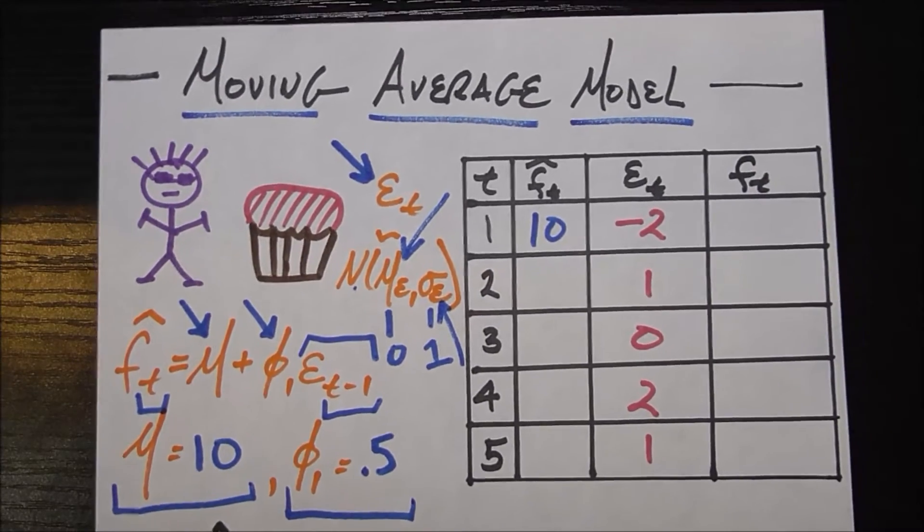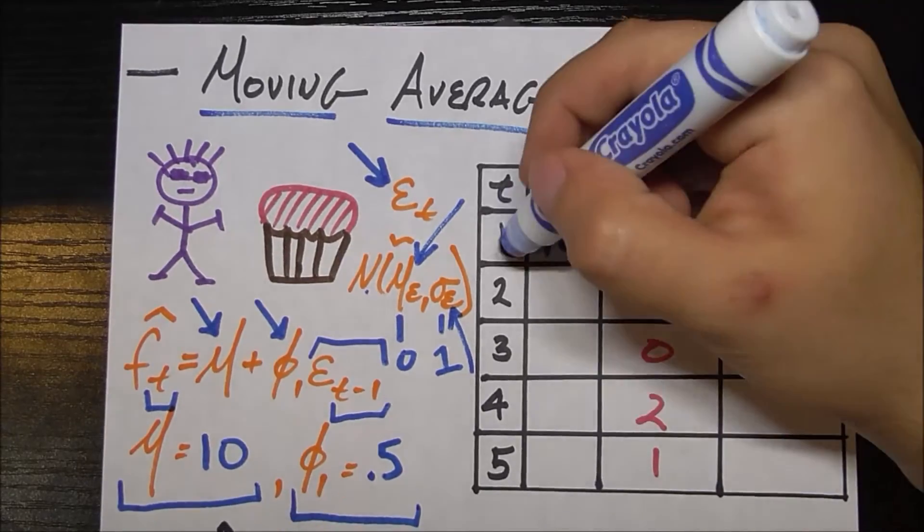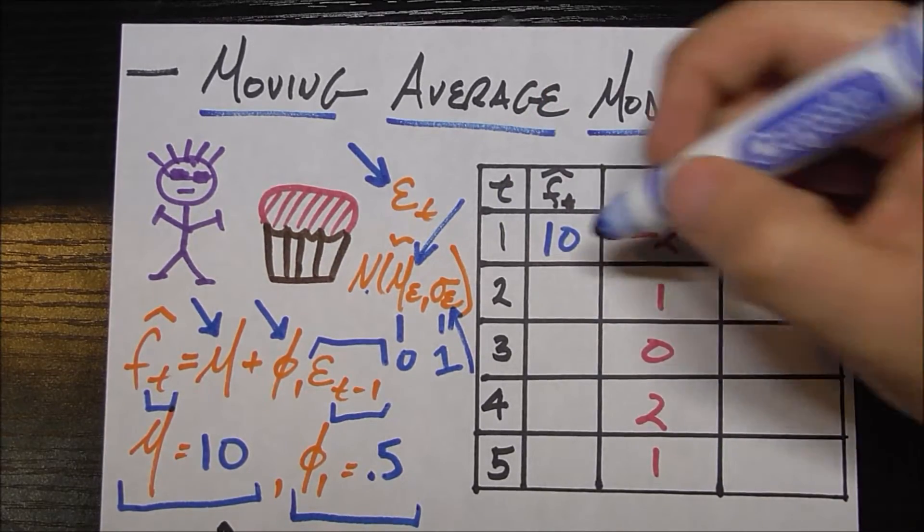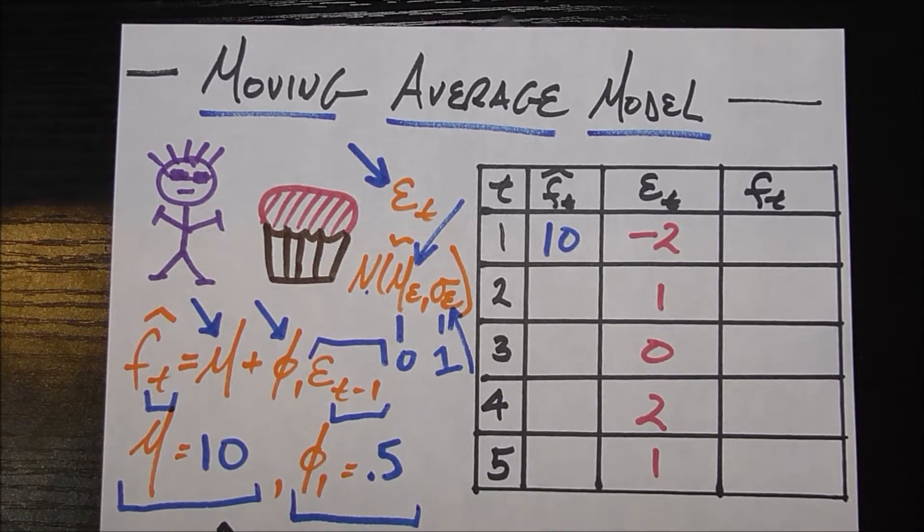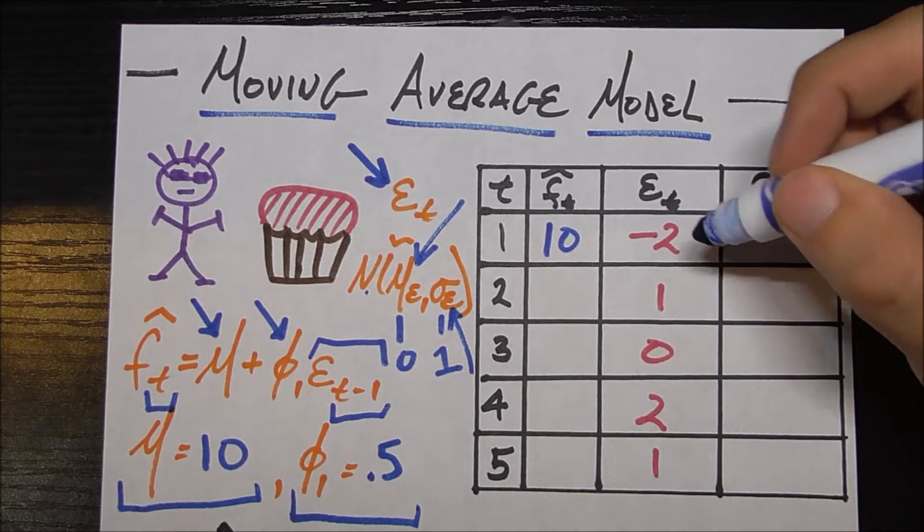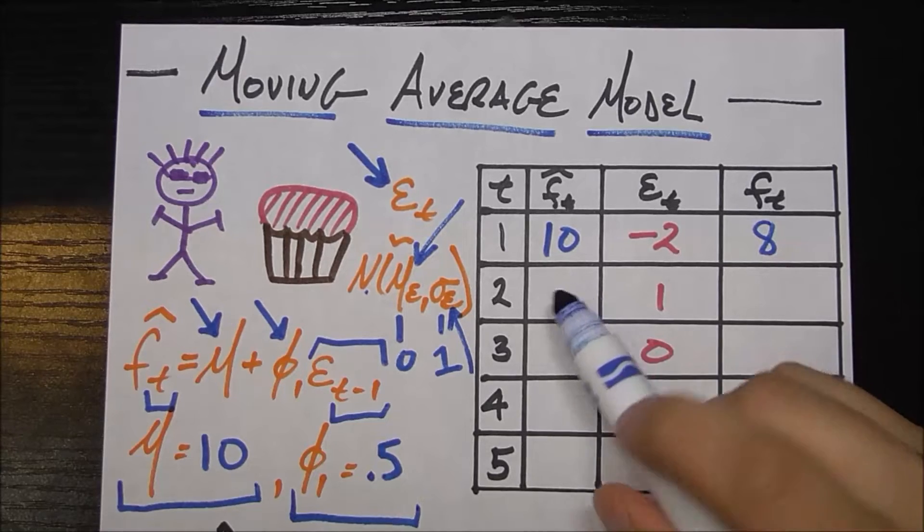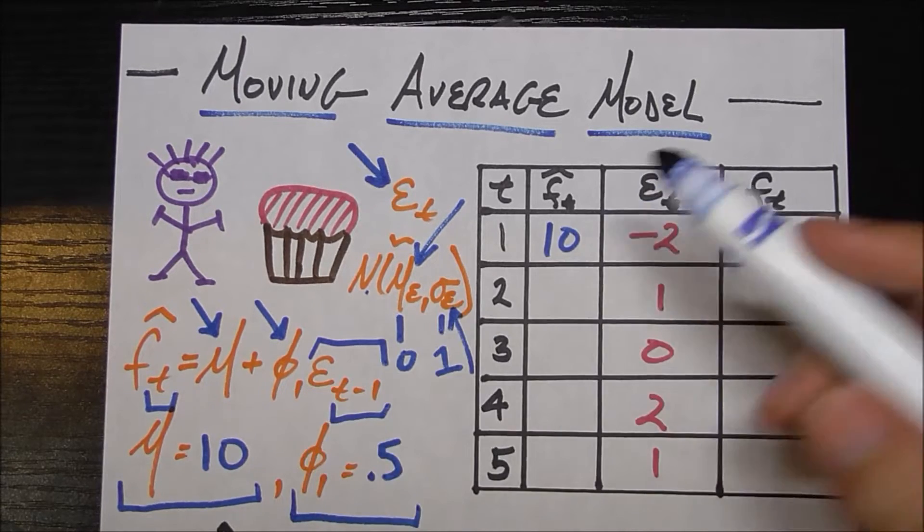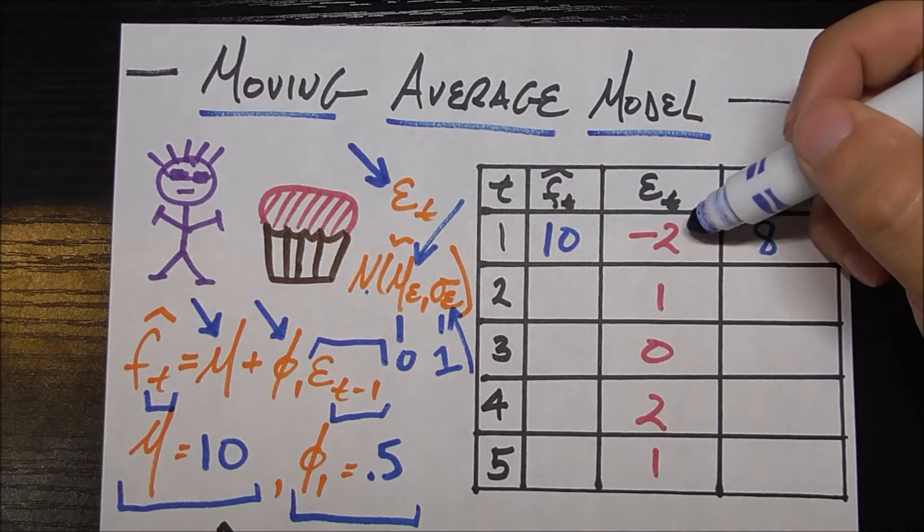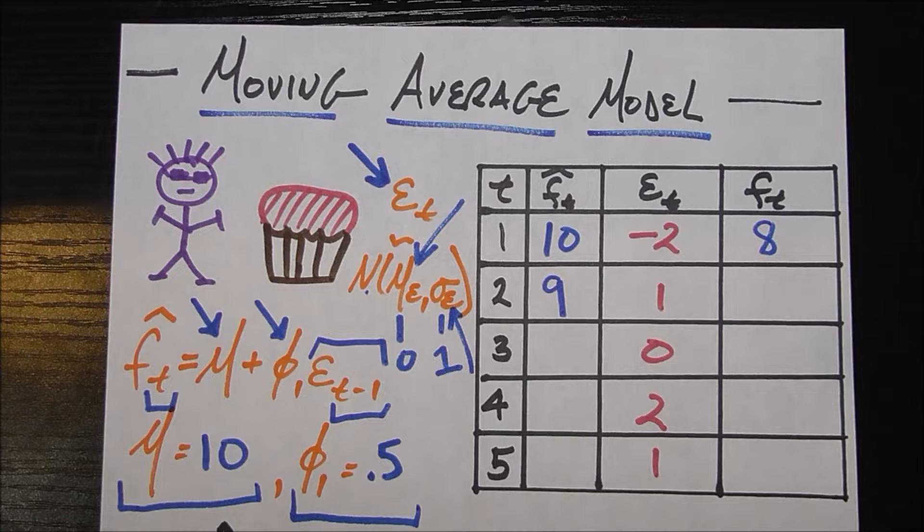So now to get an even better understanding of the moving average model, let's just work through this table here. So in the first month, since there's no prior parties, you just go ahead and bring your 10 cupcakes. That's your mean. Now in the first month, the professor says, hey, you went over by 2. You only needed 8 cupcakes. So the next month you say, okay, I'm going to bring my 10 cupcakes, but I'm going to take 50% of the error from last month. 50% of negative 2 would be negative 1. So you'll be bringing 9 cupcakes in the second month.